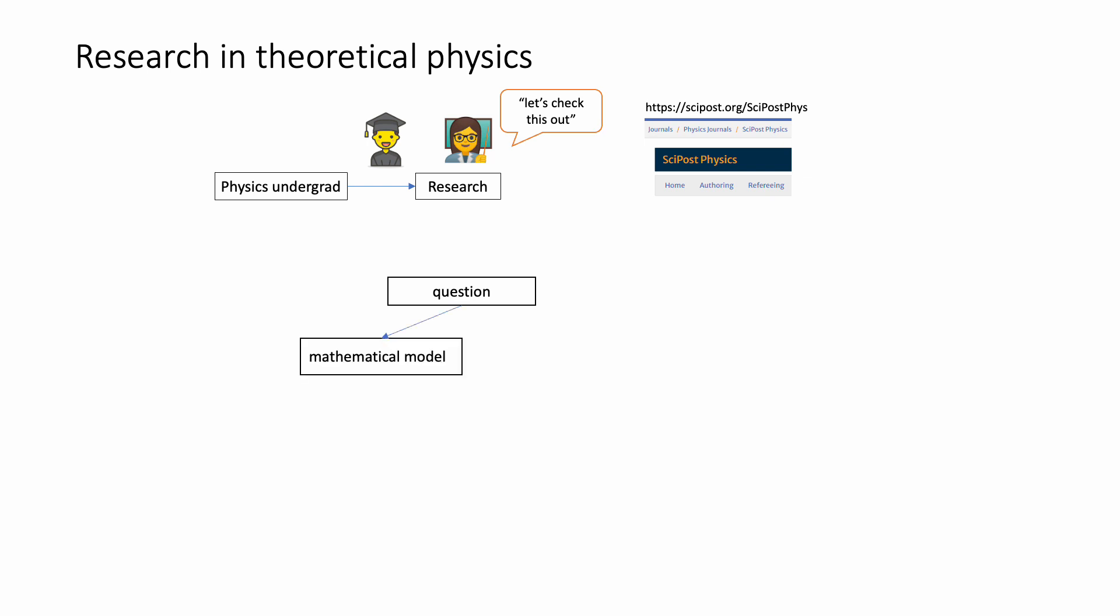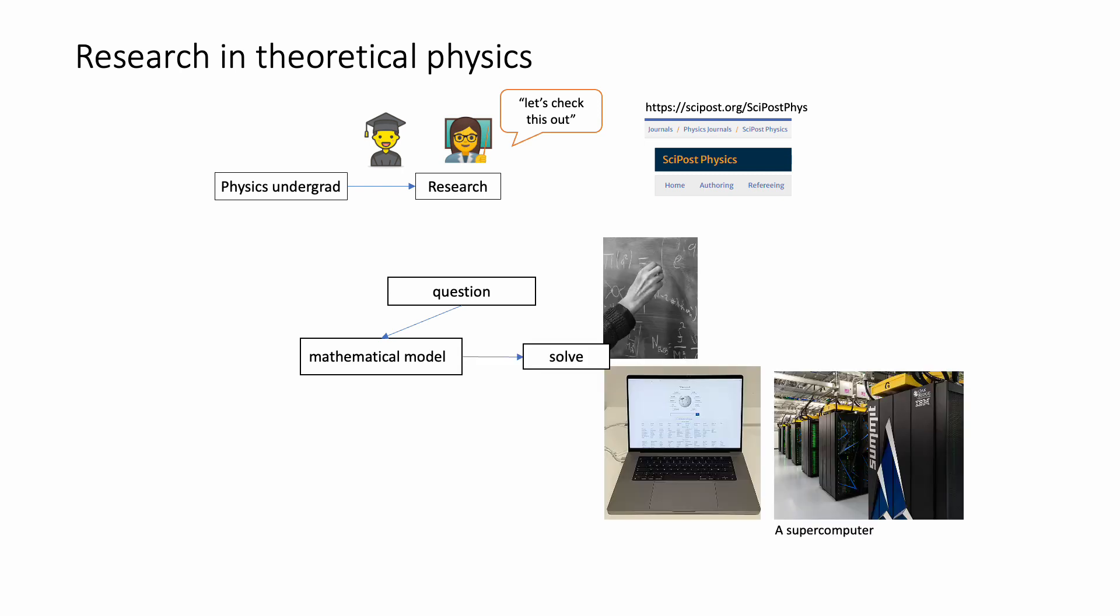Once you've identified the question, you ask how you can tell something about it using maths. This involves simplifying your problem down to its most essential ingredients, such that it can be described by simple enough mathematical equations. The next step is to find a solution of those equations, which can be done either by hand or using computers. The solution gives you a theoretical prediction about the physical phenomenon you are studying. An essential step is then to compare your prediction with reality, performing an experiment.